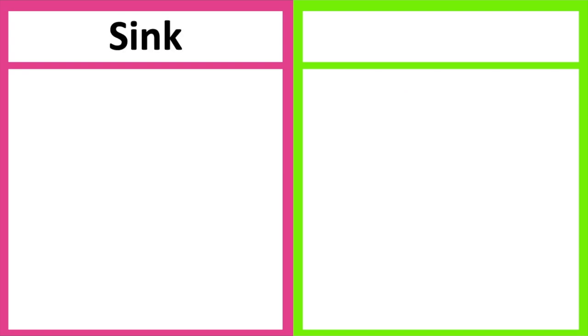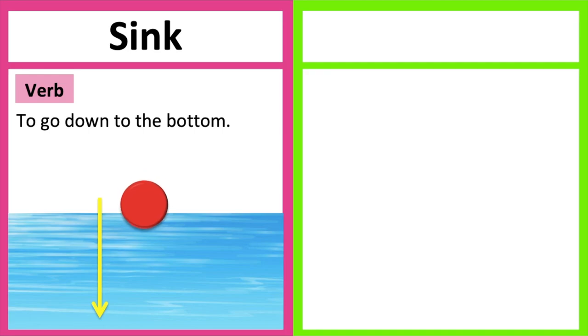Sink, float. In this lesson I will go through the difference between these two words. Sink is a verb and it means to go down to the bottom, so an object that sinks usually goes down to the bottom.